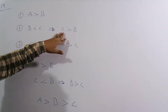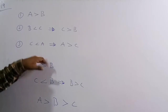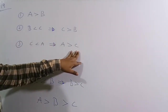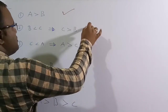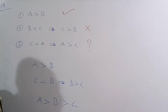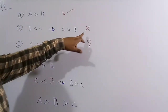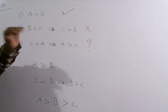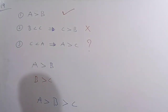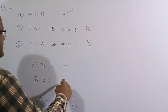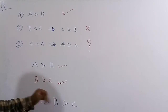Statement 1 (true): A > B. Statement 2 (false): B < C is wrong, so the correct relation is B > C. Statement 3 says C < A, equivalently A > C. From the two corrected statements: A > B and B > C.